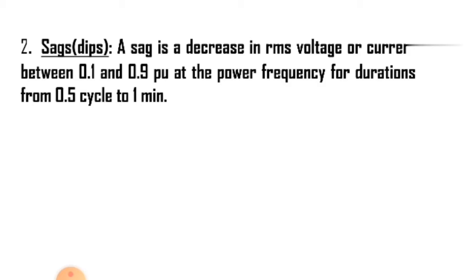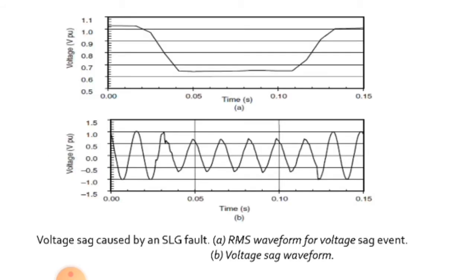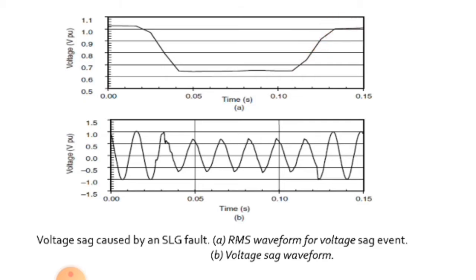Then coming to sags, also called dips. It is a decrease in RMS voltage or current between 0.1 and 0.9 per unit at the power frequency for a duration from 0.5 cycle to 1 minute. Voltage sags are usually associated with system faults but can also be caused by energization of heavy loads or starting of large motors. This graph clearly shows a typical voltage sag associated with a single line to ground fault on another feeder from the same substation. An 80% sag exists for about three cycles until the substation breaker is able to interrupt the fault current. Typical fault clearing times range from 3 to 30 cycles depending on the fault current magnitude and the type of over-current protection.